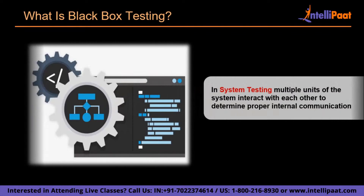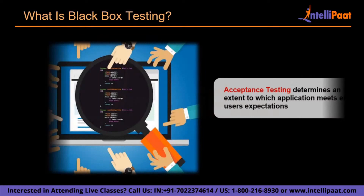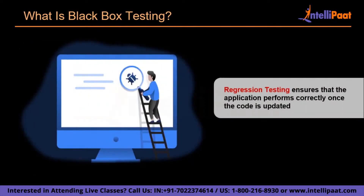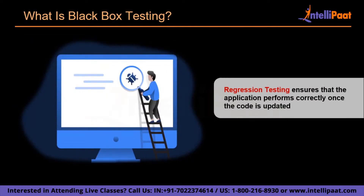Then we have system testing, where multiple components of the system interact with each other to determine proper internal communication in software. Next is acceptance testing — this quality assurance test determines to what extent an application meets end user's expectations. Finally, we have regression testing, which ensures that the application performs correctly once the code is updated or changed to resolve previous bugs.